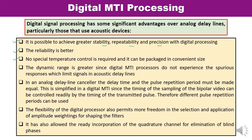Dynamic range is greater in digital signal processing. In analog delay lines, the delay time and the pulse repetition time must be made equal, but this is simplified in digital MTI because the timing of the sampling of bipolar video can be controlled by the timing of the transmitted pulse, meaning different pulse repetition periods can be used. Digital processing also offers flexibility in the selection and application of amplitude weighting for filter shaping, and has allowed the ready incorporation of the quadrature channel, which is used for the elimination of blind phases.